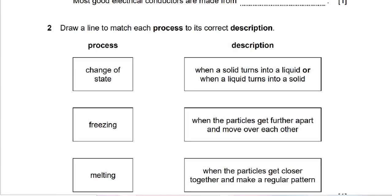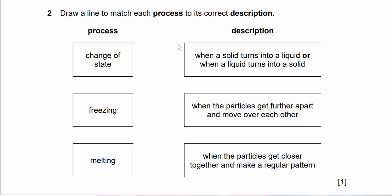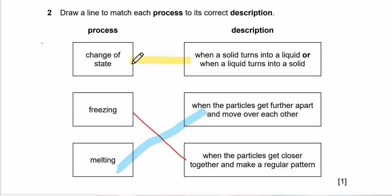Let's move on to question 2. Question 2 says, draw a line to match each process to its correct description. Process: change of state, freezing, melting. Description is when a solid turns into a liquid or when a liquid turns into a solid, when the particles get further apart and move over each other, when the particles get closer together and make a regular pattern. Prepare your answer. Here's the answer. So change of state is the first box. Freezing is when particles get closer and make a regular pattern. For melting, particles get further apart and move over each other.